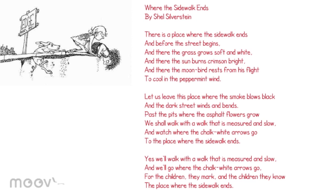The first step of the method is to locate repetitions in the text, which can be words, details, or symbols. After we find these repetitions, we will note how many times they are found in the text and write out the exact words and number of times they are repeated.